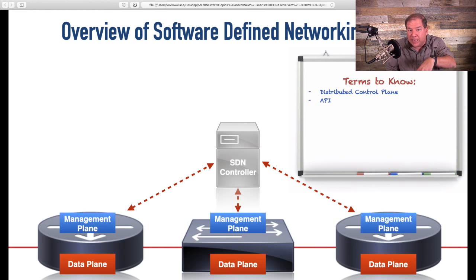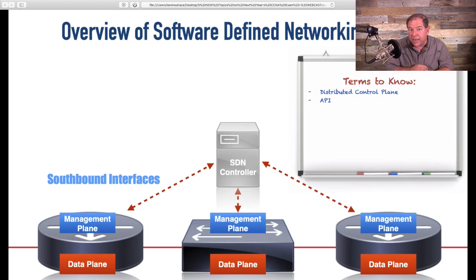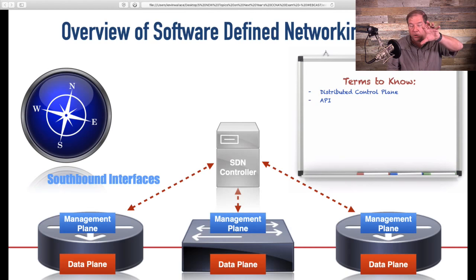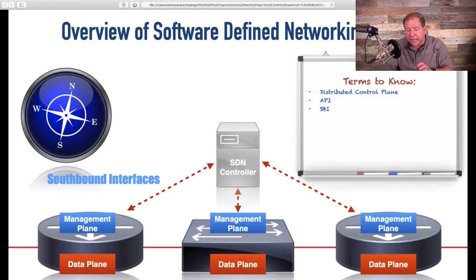That communication between the controller and managed devices uses an API — an application programming interface — which is how one piece of software talks to another. When talking from the controller down to the managed devices, we call these southbound APIs, or SBIs — southbound interfaces. We say 'south' because we normally draw the controller in the middle with managed devices below it, pointing south. An example of a southbound API — one that's kind of an industry standard — is OpenFlow. Cisco also has their own called OpFlex for Nexus switches.